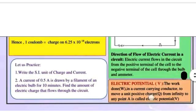One coulomb charge is equal to 6.25 into 10 to the power 18 electrons.